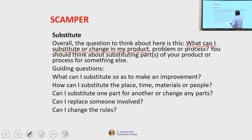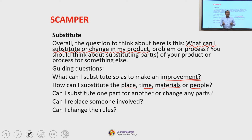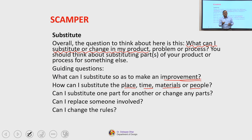Guiding questions for Substitute include: what can I substitute so as to make an improvement? How can I substitute the place, time, materials or people? How can I substitute the call-to-action feature, the primary activity, secondary activities, color palettes, or grid system? Can I substitute one part for another — and if I change a part and substitute it with another, how will the product perform? How will it be perceived by the user? Can I replace someone involved? Can I change the rules or the way the product functions?